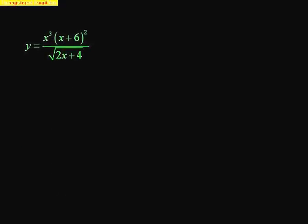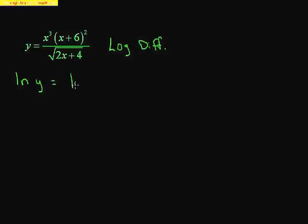We want to find the derivative of this function. We could use the quotient rule, but it would be very messy. So we're going to use logarithmic differentiation, which has four steps. Step one: take the natural log of both sides. So ln(y) = ln(x³(x + 6)² / √(2x + 4)).